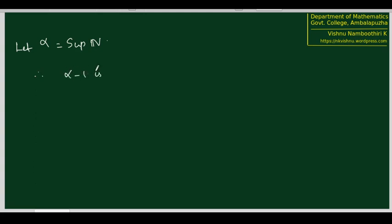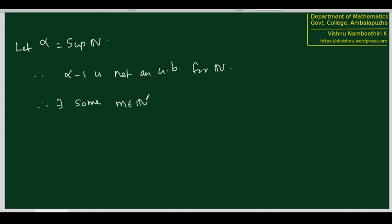Therefore, alpha minus 1 is not an upper bound for N. This means that there exists at least one element in the set of all natural numbers that is greater than alpha minus 1. Therefore, there exists some m in N such that alpha minus 1 is less than m, because it is not an upper bound. But then alpha is less than m plus 1. Now m is in N, and the set of all natural numbers satisfies the property that if some element is there, that element plus 1 is also there. Therefore, m+1 belongs to N.